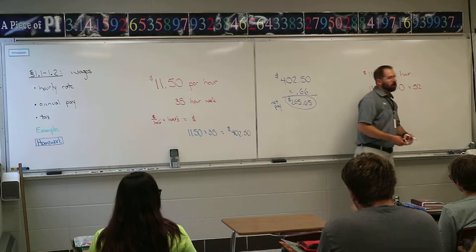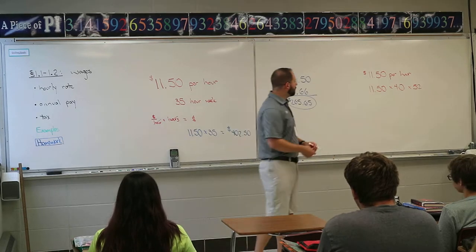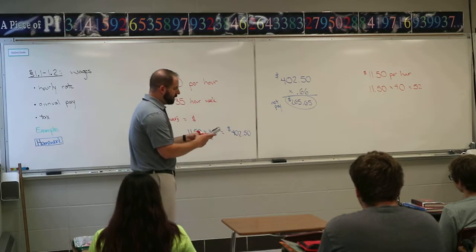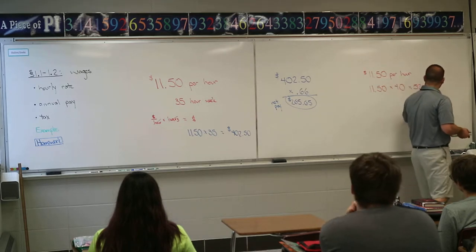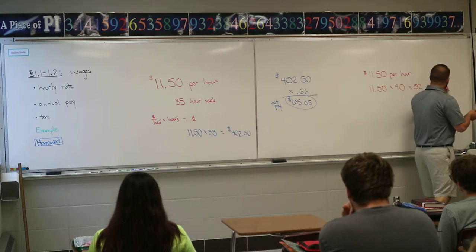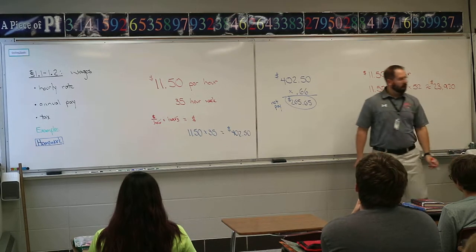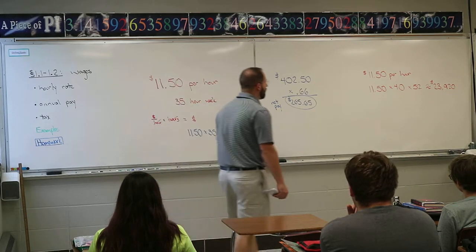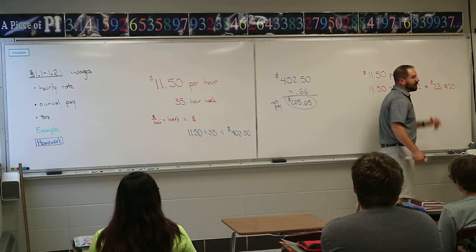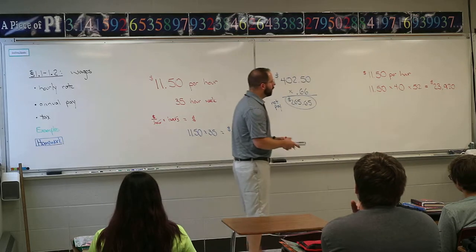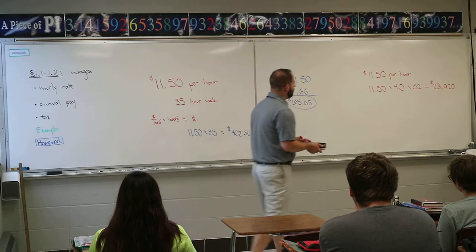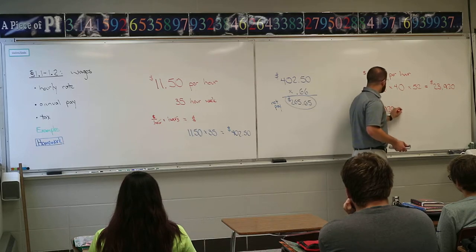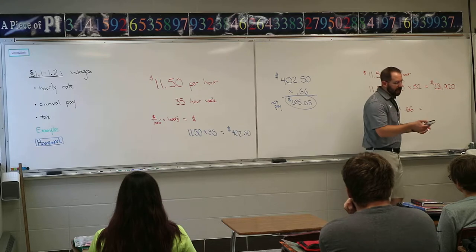That calculation gives you your annual pay. $11.50 times 40 times 52 equals $23,920. That's your gross annual pay — before taxes. To find what you'd actually have in cash at the end of the year, take that number times 0.66. That's your net annual income — what you'll realistically have to spend.